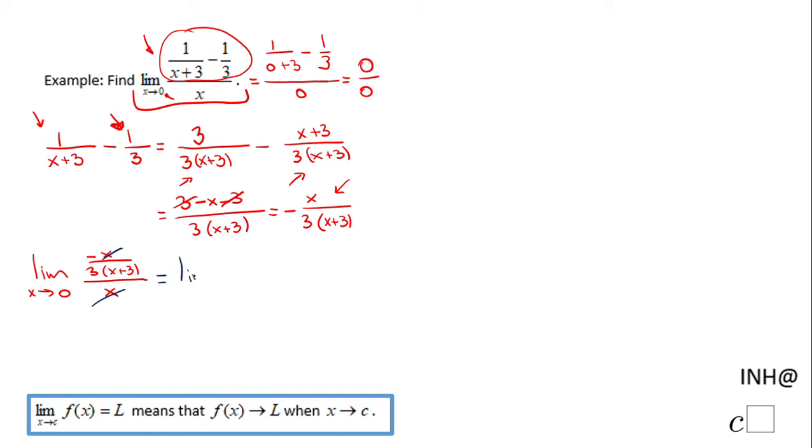So our simplest form is limit as x approaches 0 of -1 over 3(x+3). Now you can plug 0 in, and we end up with -1 over 3(0+3). That will be -1/9.